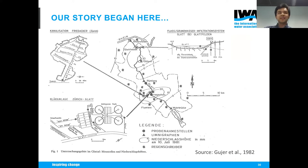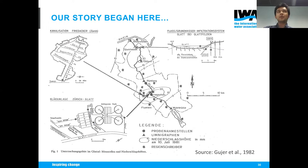The story begins with Integrated Modeling. The first mentions of it go back to 1982, where a study by Goya et al. in the Swiss Valley of Glatt found that being able to look at the entire urban drainage system rather than just its individual components can lead to much better management outcomes and more cost-effective solutions. This study was one of the first to kick-start a whole evolution of modeling towards more integrated approaches.